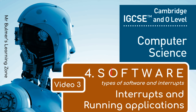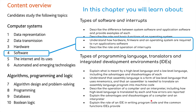Welcome back everybody. We are on topic 4, software, as part of the IGCSE Cambridge Computer Science qualification. This is video 3 and we're going to be talking about interrupts and we're going to be looking at running applications on our computers. We're still in the types of software and interrupts, and we need to understand these things. Then we'll move on to IDEs and programming environments.